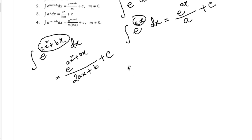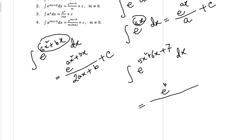Similarly, let me show you another example. Integration of e to the power 5x² plus 6x plus 7 is equal to e to the power 5x² plus 6x plus 7, divided by the derivative of the power 5x² plus 6x plus 7. The derivative of 5x² equals 10x, so the derivative of the full expression is 10x plus 6. So this is the answer.